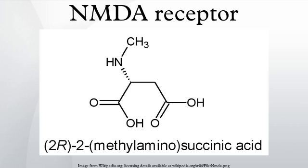NMDA modulators including esketamine, GLYX-13, NRX-1074, and CERC-301 are under development for the treatment of mood disorders, including major depressive disorder and treatment-resistant depression. In addition, ketamine is already employed for this purpose as an off-label therapy in some clinics. Compared to dopaminergic stimulants, phencyclidine can produce a wider range of symptoms that resemble schizophrenia in healthy volunteers, which has led to the glutamate hypothesis of schizophrenia. Experiments in which rodents are treated with NMDA receptor antagonists are today the most common model for testing novel schizophrenia therapies or exploring the mechanism of drugs already approved for treatment of schizophrenia.